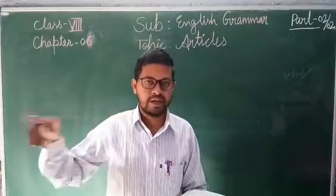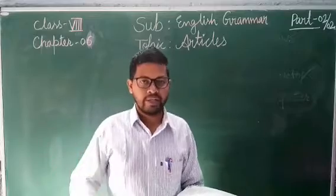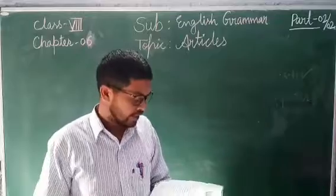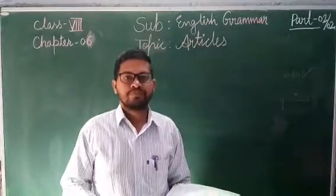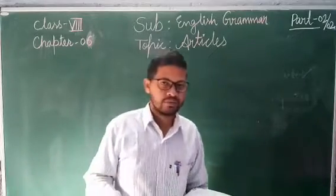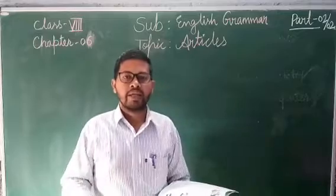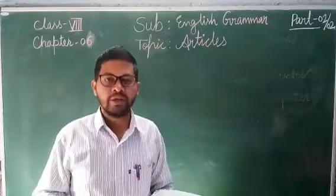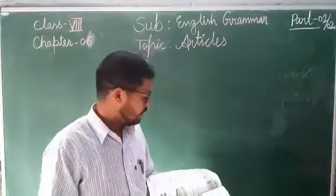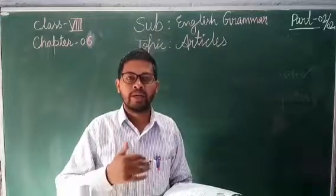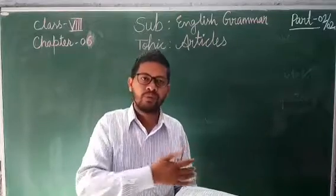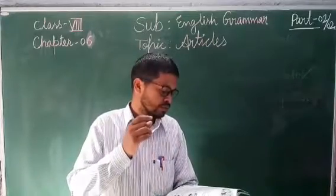The first kind is definite articles, which is 'the,' and the second kind is indefinite articles — 'a' and 'an.' We use 'a' only for consonant sounds, and 'an' is used for vowels. But according to the sound, you sometimes have to change. This is what we were looking at — how we can use 'the,' 'a,' and 'an.'